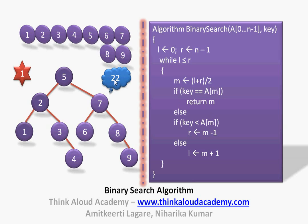Let's also trace through the example of searching for 22. Initially L=0 pointing to element 1, and R=n-1 pointing to element 9. Since L ≤ R, we calculate M = (L+R)/2, which again points to element 5. We compare: does 22 match A[M]=5? It does not. We check whether 22 is less than A[M]=5 — it is not; 22 is greater than 5. So we go into the else part and set L = M+1. The lower bound now points to element 6, and R still points to element 9.